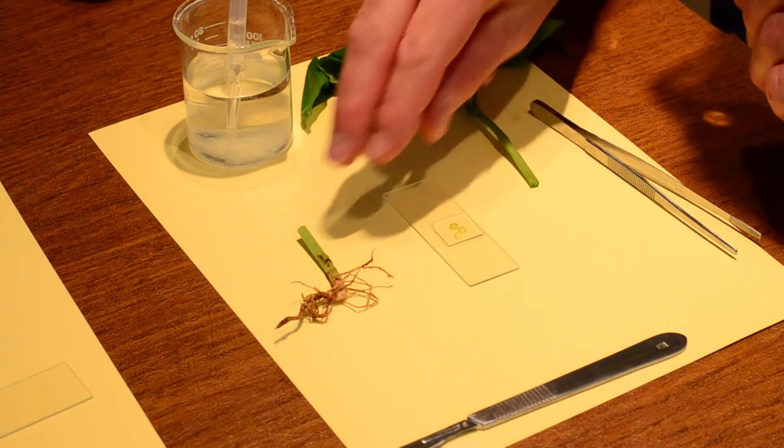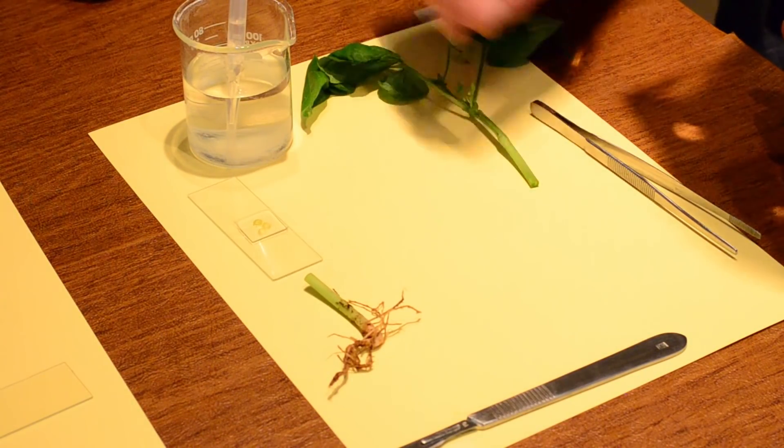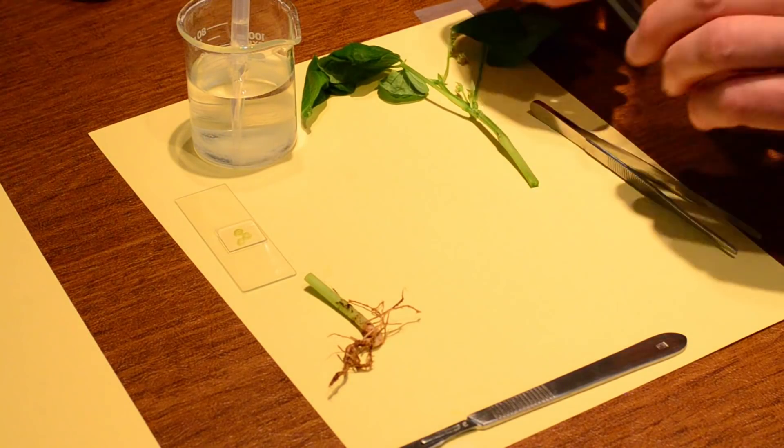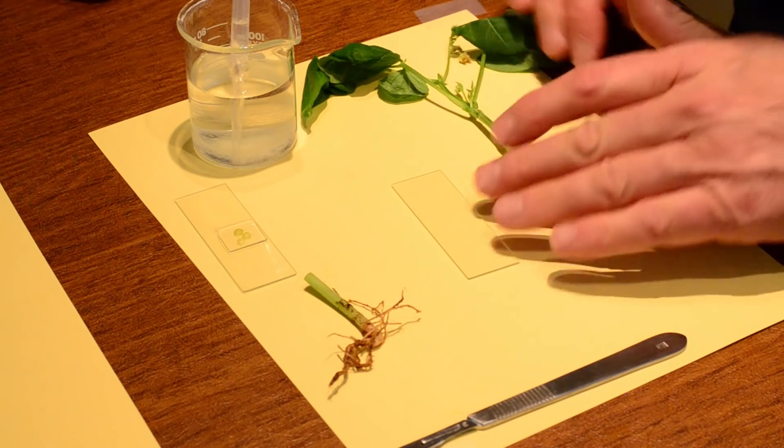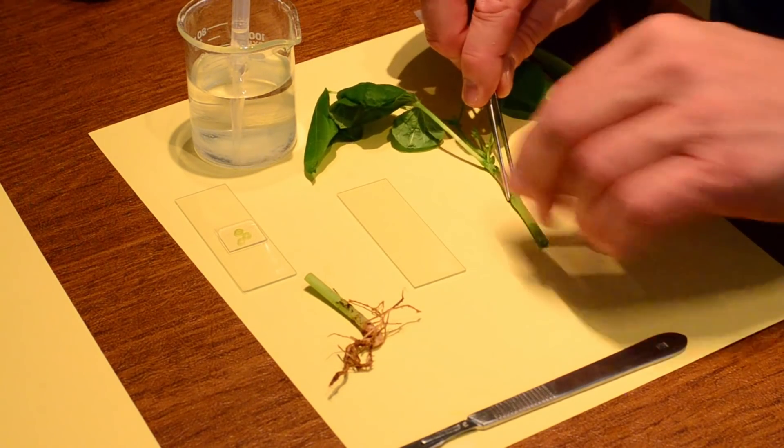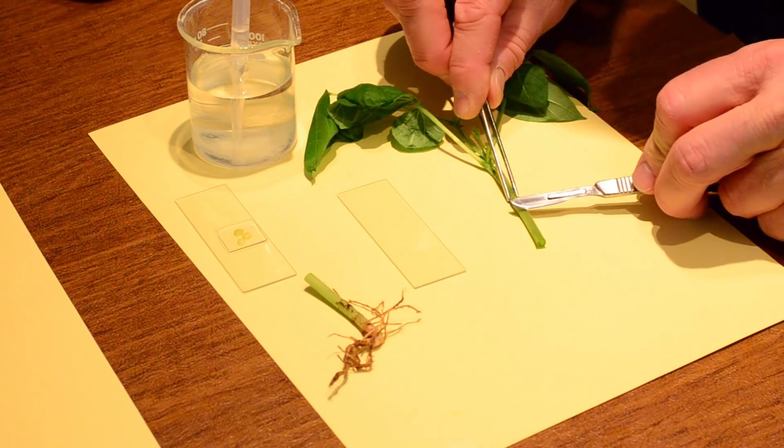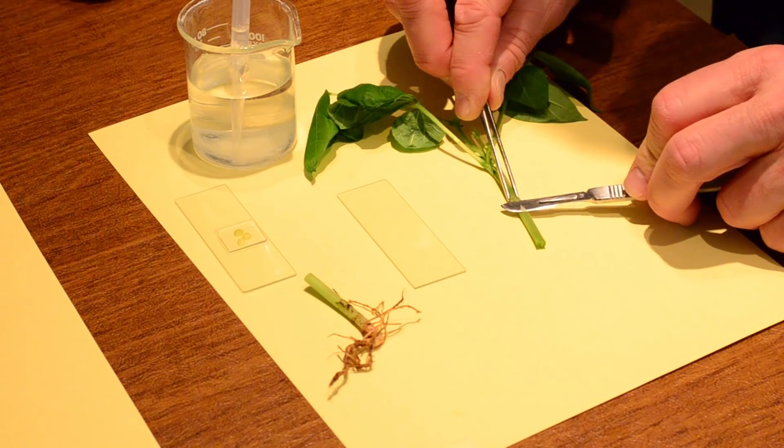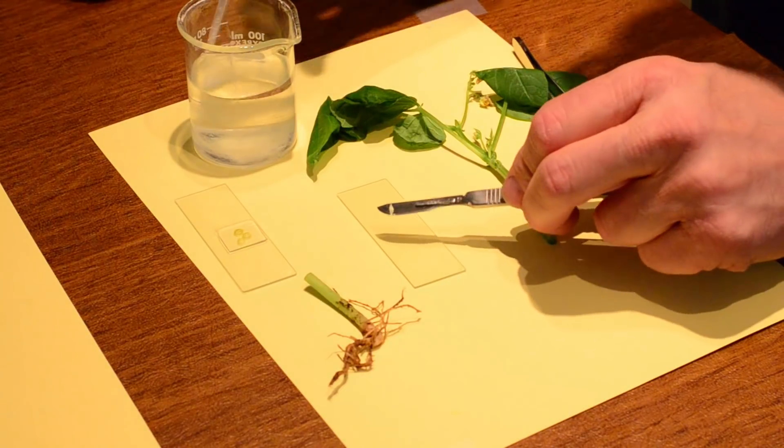All right. The next one, I'll push this off to the side here, is we do a longitudinal section. And I'm going to get my new slide here. And again, I'm going to grab the stem. And I'm going to make a decision right here. I'm just going to just barely go underneath. Make a nice little cut. Right there.